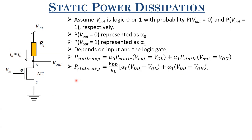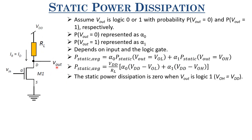For this resistor-load inverter circuit, P_static_average = VDD × I_R. When the output is at VOL, the current is (VDD − VOL)/R, giving a term (VDD/RL) × alpha_zero × (VDD − VOL). When the output is at VOH = VDD, the voltage across the resistor is zero, so that term vanishes. Therefore, this circuit dissipates static power only when the output is at logic level low, not when it is at logic level one.